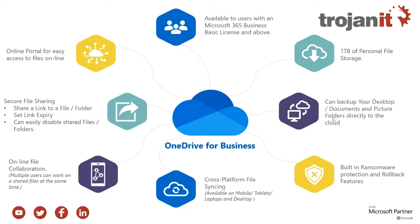With OneDrive, you can utilize a very good feature called file backup, and it can back up your desktop files, your documents and pictures directly to the cloud. What it does is automatically point your desktop, documents and pictures folders directly to your cloud storage. So as you save to any of those locations on your PC or laptop, the data goes directly up to the cloud. If you lose the device, you can just get a new laptop or tablet, sign in, and all your data is there and secure. I'll show you how to turn that on as well.